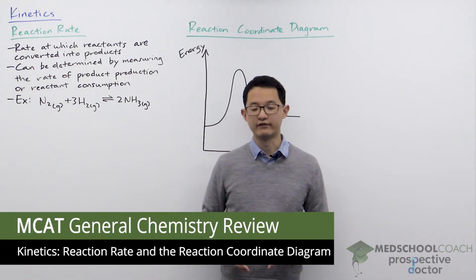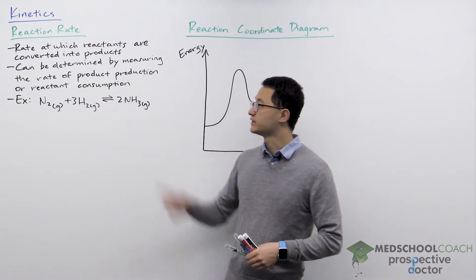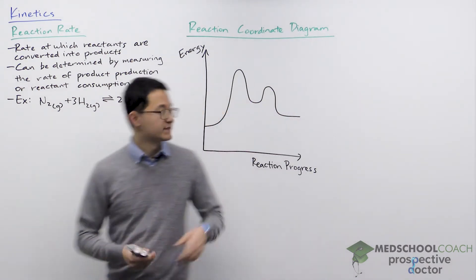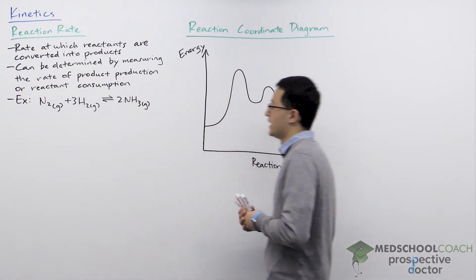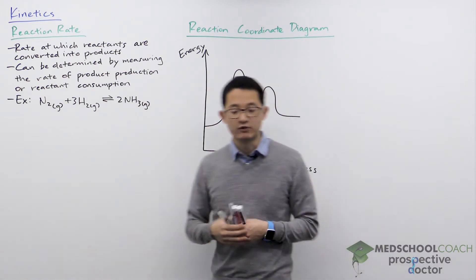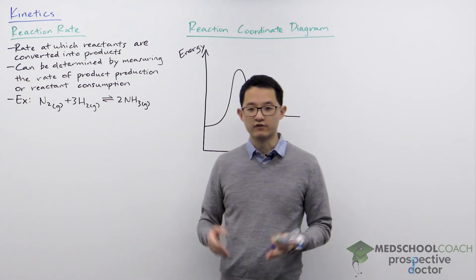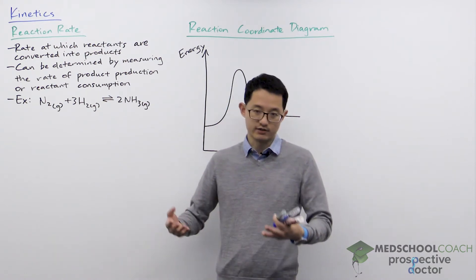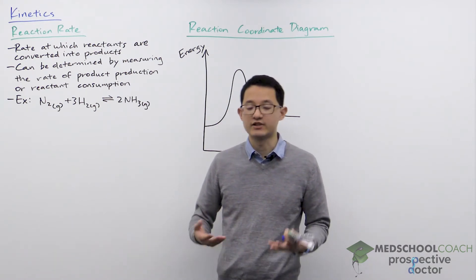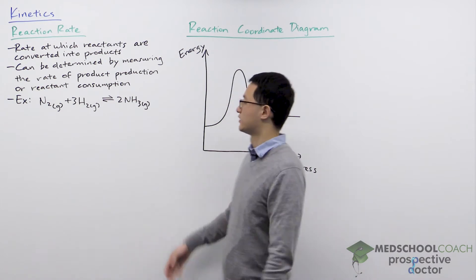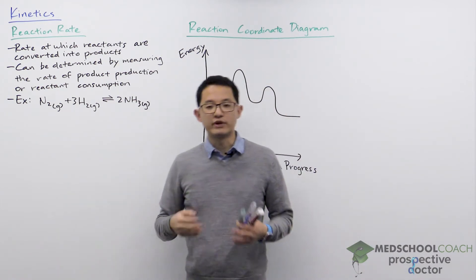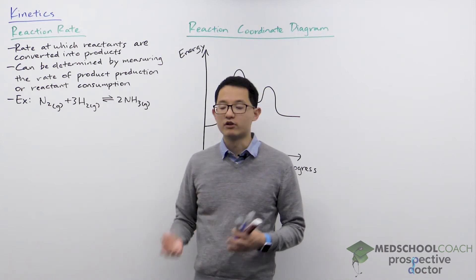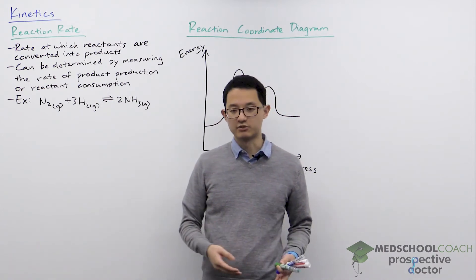In the next few videos we're going to cover kinetics. This video is going to start by introducing reaction rate as well as the reaction coordinate diagram. Reaction rate can be defined as the rate at which reactants are converted to products — how fast your reaction is proceeding. The reaction rate can be determined by measuring either the rate of product production or the rate of reactant consumption.